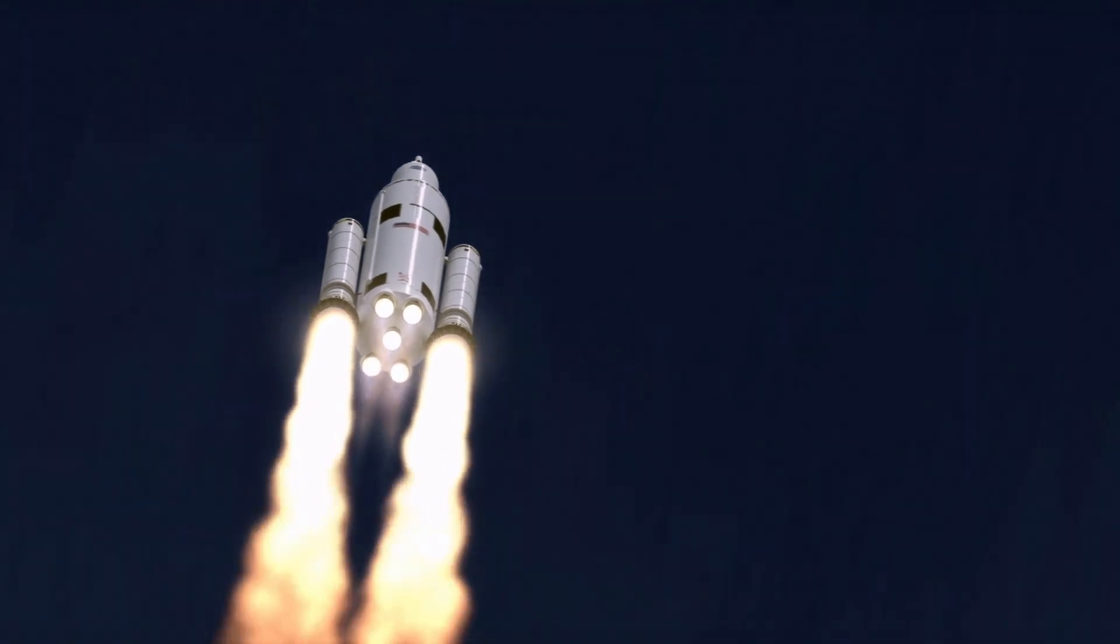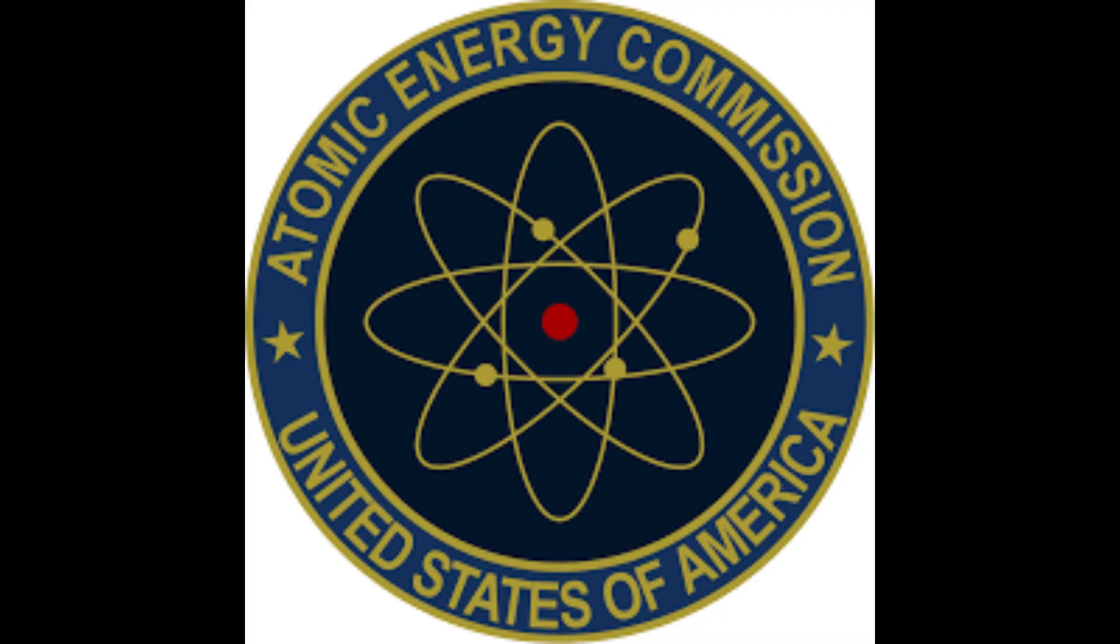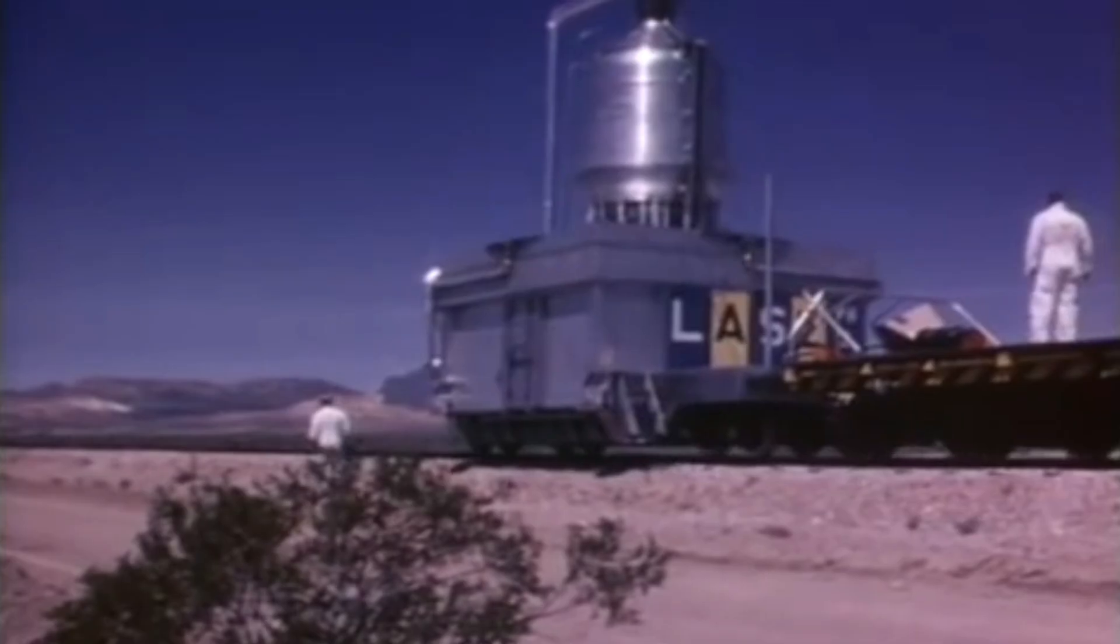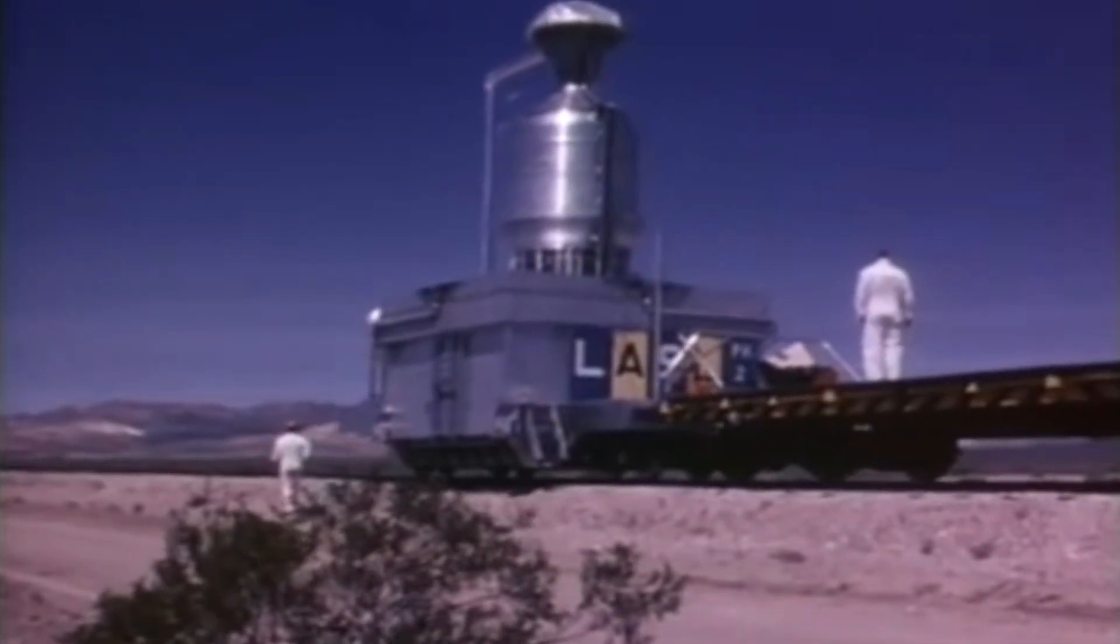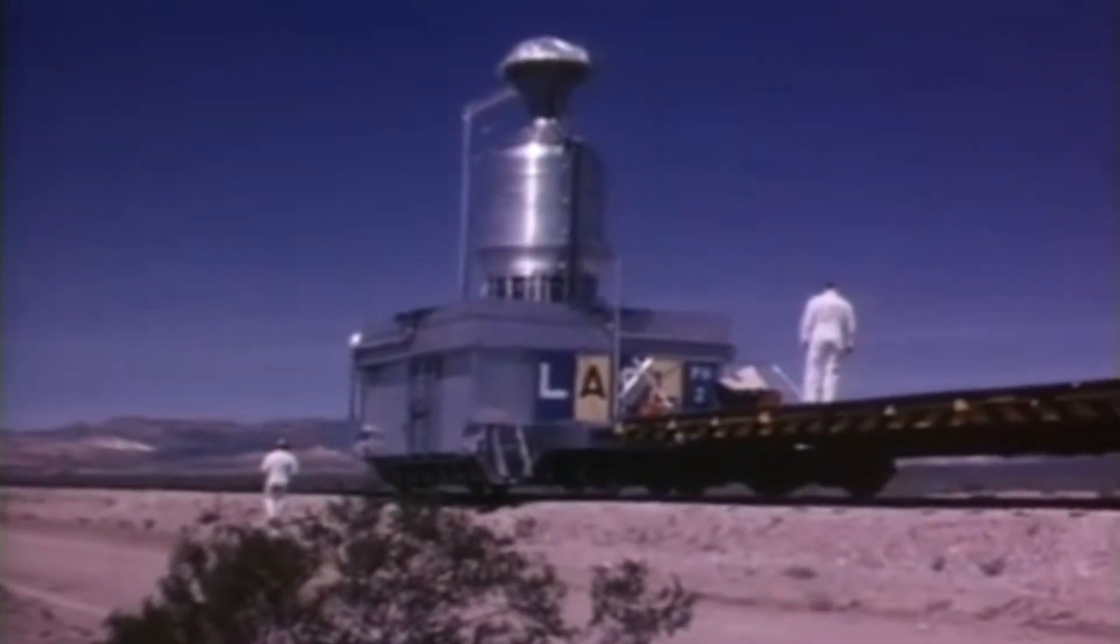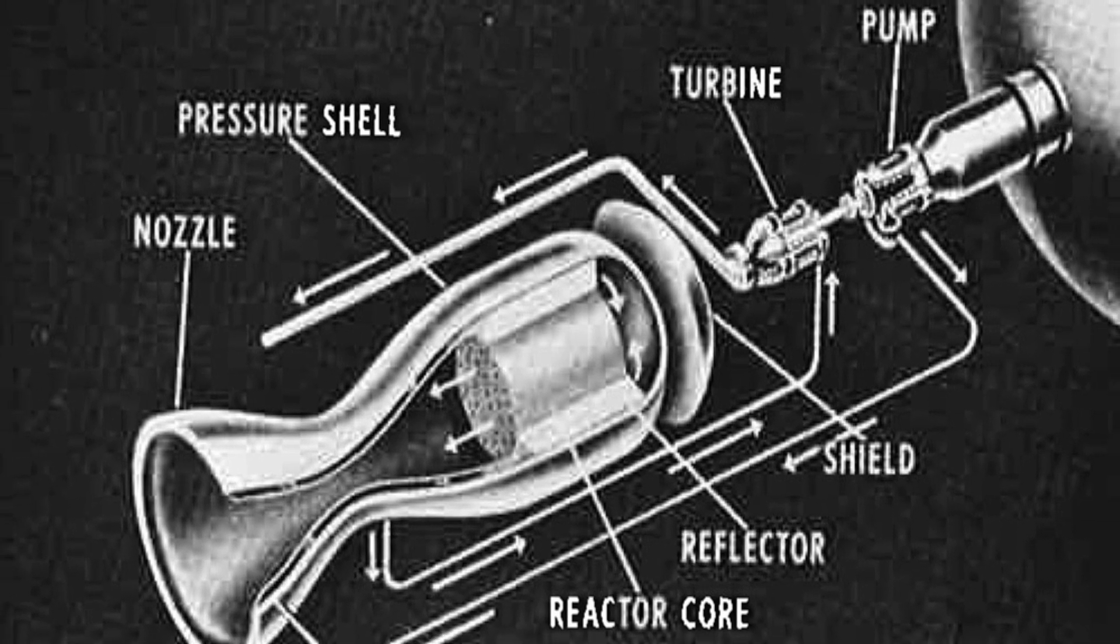NASA commenced research on nuclear rockets in 1946. In 1955, the AEC and the Air Force initiated Project Rover with the goal of developing both a nuclear aircraft and a rocket. The first prototype of a nuclear rocket was successfully tested in 1959.